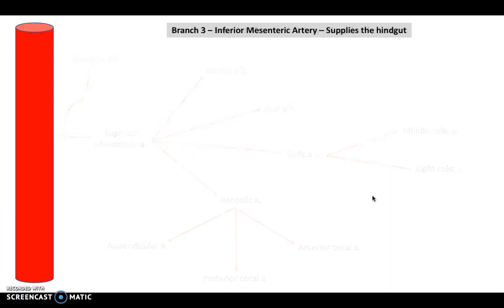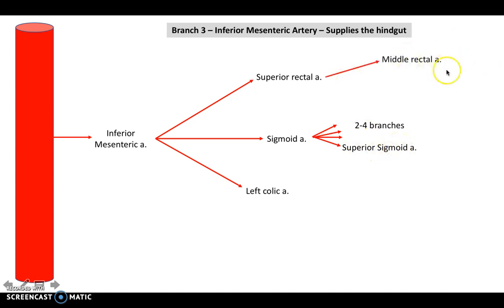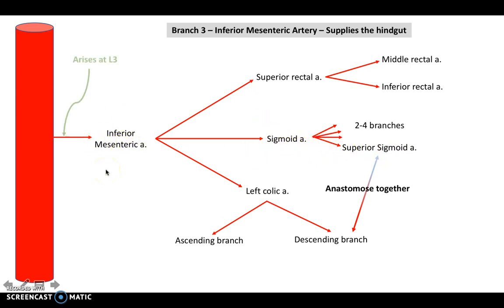The inferior mesenteric artery supplies the hindgut and arises at L3. It divides into a superior rectal artery, a sigmoid artery, and a left colic artery. The sigmoid artery gives two to four branches including a superior sigmoid artery. The superior rectal artery forms the middle rectal artery and the inferior rectal artery. The left colic artery has an ascending and a descending branch; the descending branch anastomoses with the superior sigmoid artery.